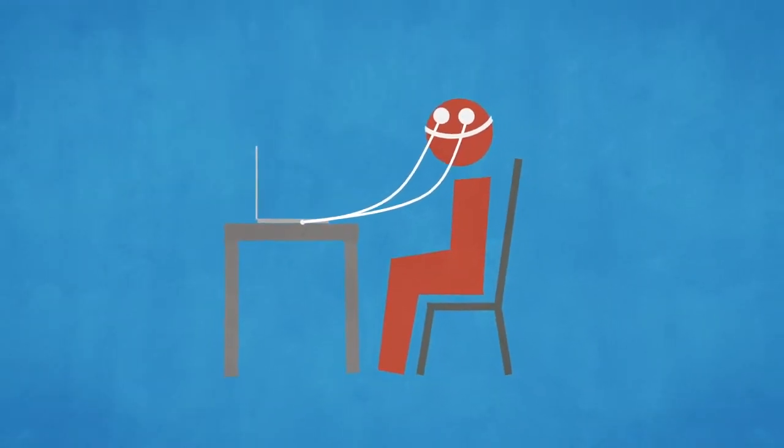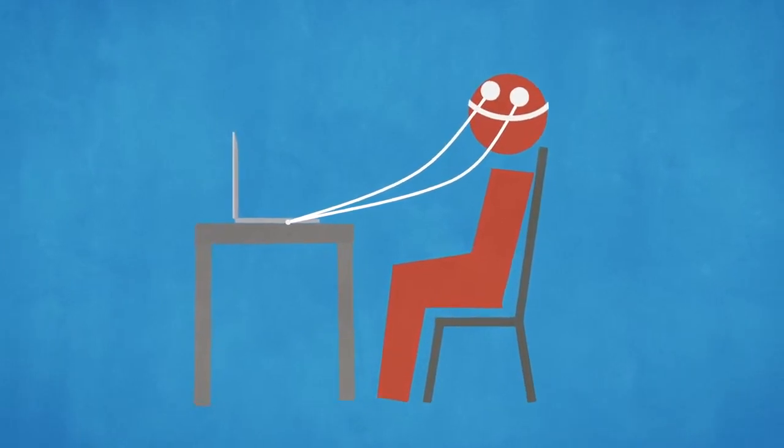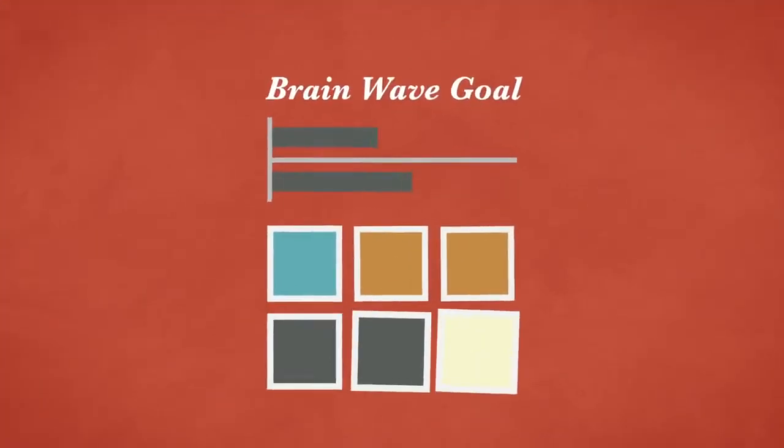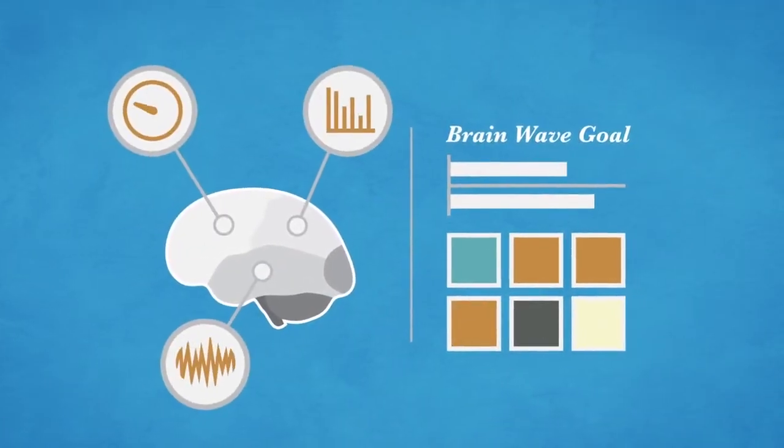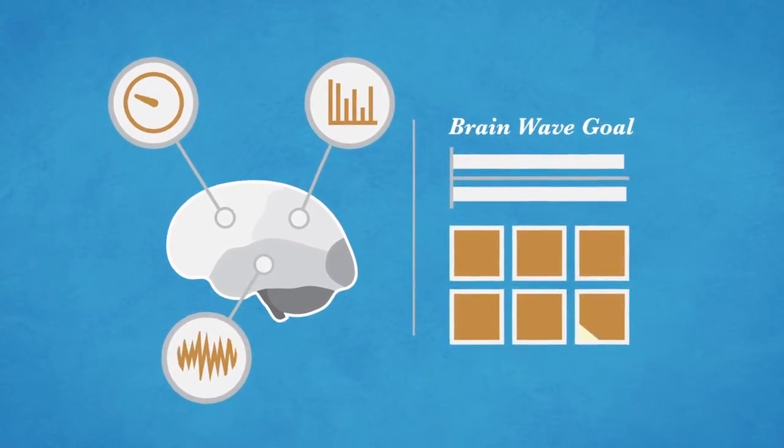Neurofeedback is conducted by placing sensors on carefully selected locations of a client's scalp. The client then watches a video in a special format that responds to their brain activity. When desired brain function is detected, the person is rewarded through positive feedback on the screen.